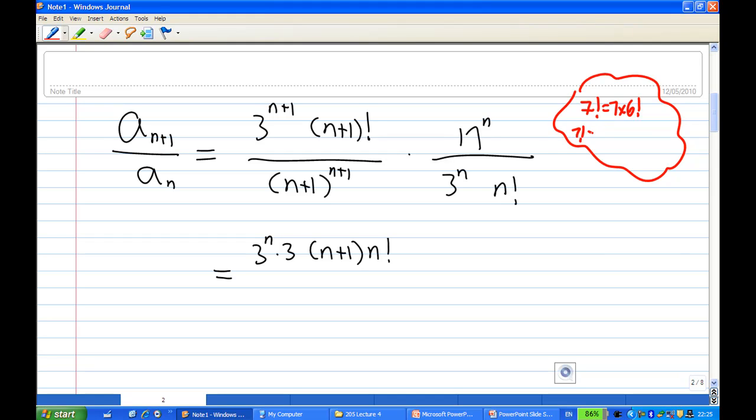So first of all, for example 7 factorial we know is 7 times 6 factorial, because 7 factorial is 7 times 6 times 5 times 4 times 3 times 2 times 1, right? And 6, 5, 4, 3, 2, 1 is just 6 factorial. So I am using this: n plus 1 factorial is n plus 1 times n factorial.